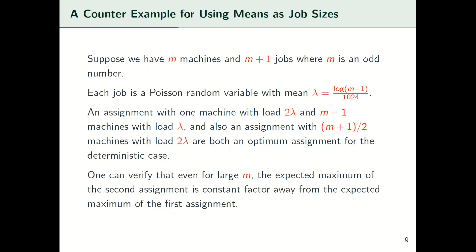Note that the fact that the means are a small constant times log m is crucial. As will be explained later, if the constant is large enough — say something like 1000 over epsilon squared — then both assignments would be essentially optimal and concentrated around the maximum load.